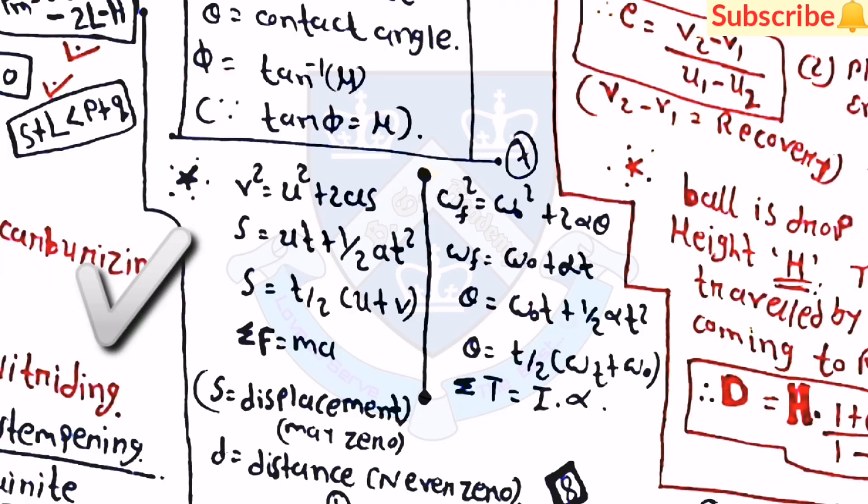Then after some more important equations which are basics but you just have to go through it once. v squared is equal to u squared plus 2as. Then s is equal to ut plus half at squared, and s is equal to t by 2 into u plus v. Then sigma F is equal to ma. Similarly, omega_f squared is equal to omega_naught squared plus 2 alpha theta. Then omega_f is equal to omega_naught plus alpha t. Then theta is equal to t by 2 into omega_f plus omega_naught. Then sigma tau is equal to I into alpha.